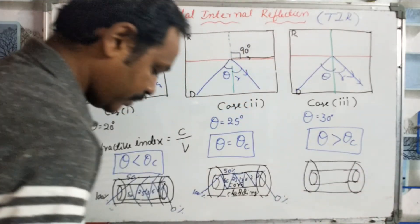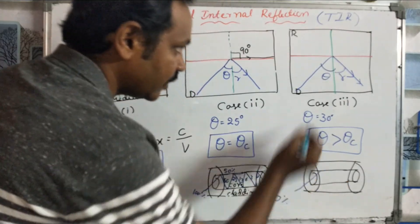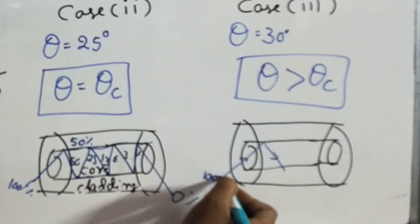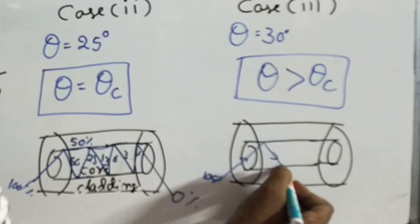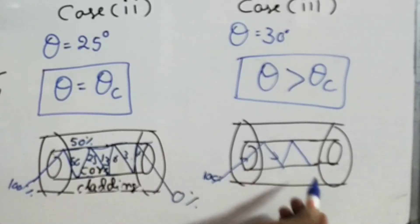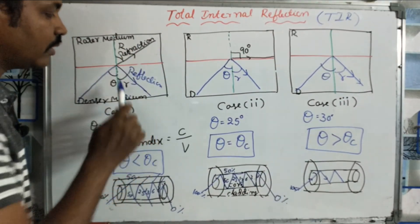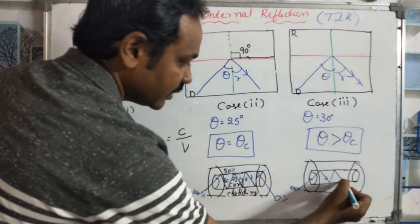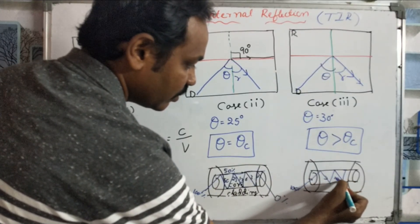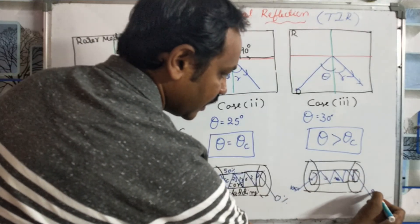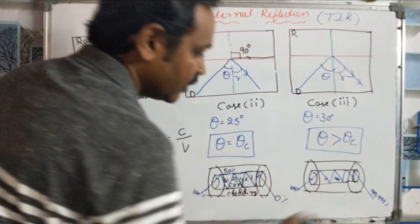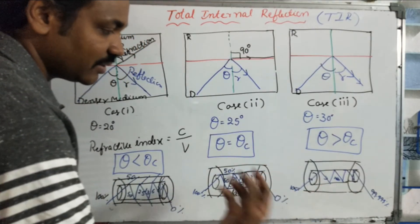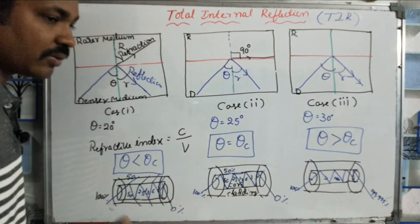Inside the optical fiber, the core and cladding work together. Only about 0.001 percent of light collides with the cladding and is lost. This is a very low percentage and is negligible.